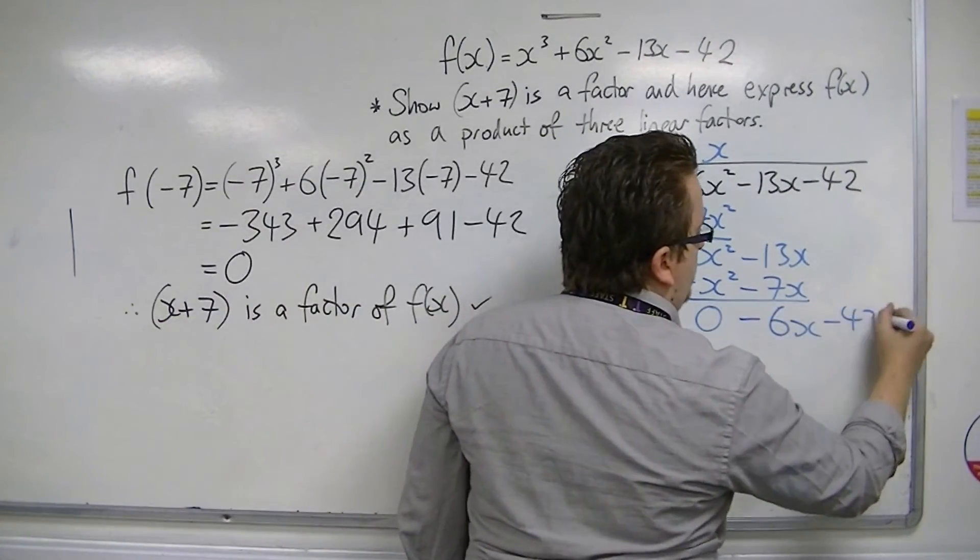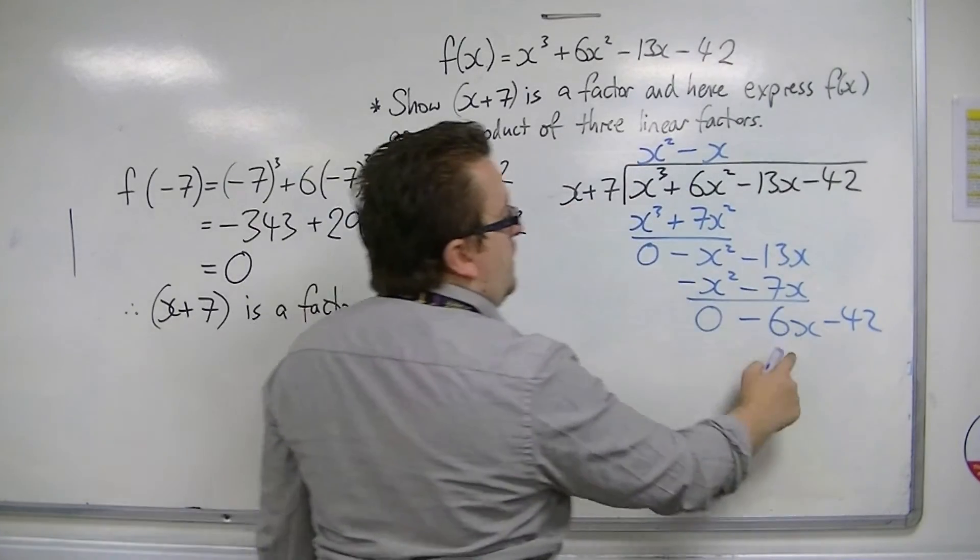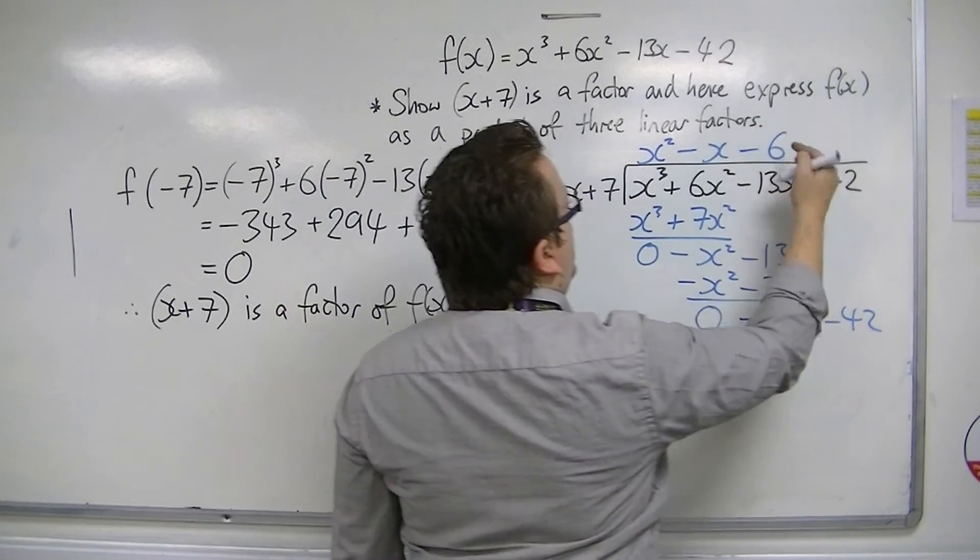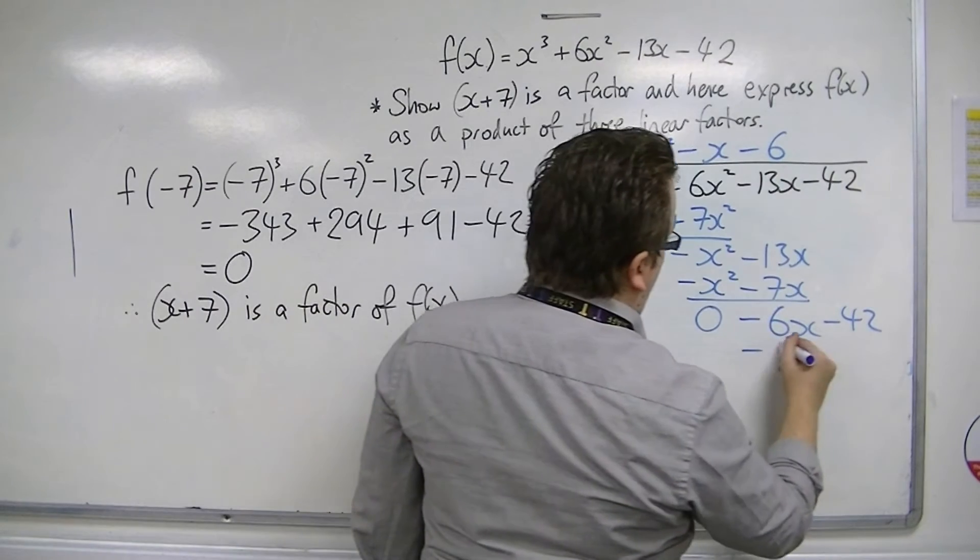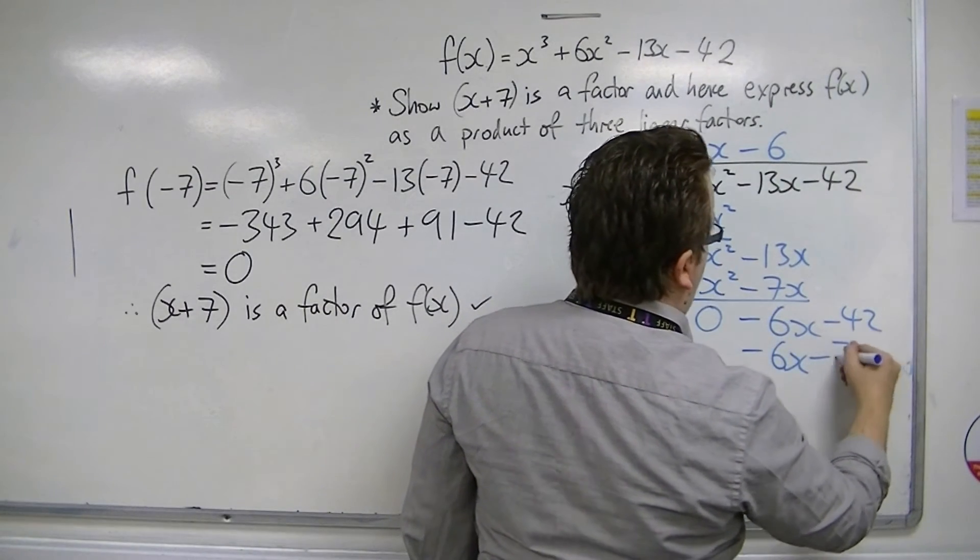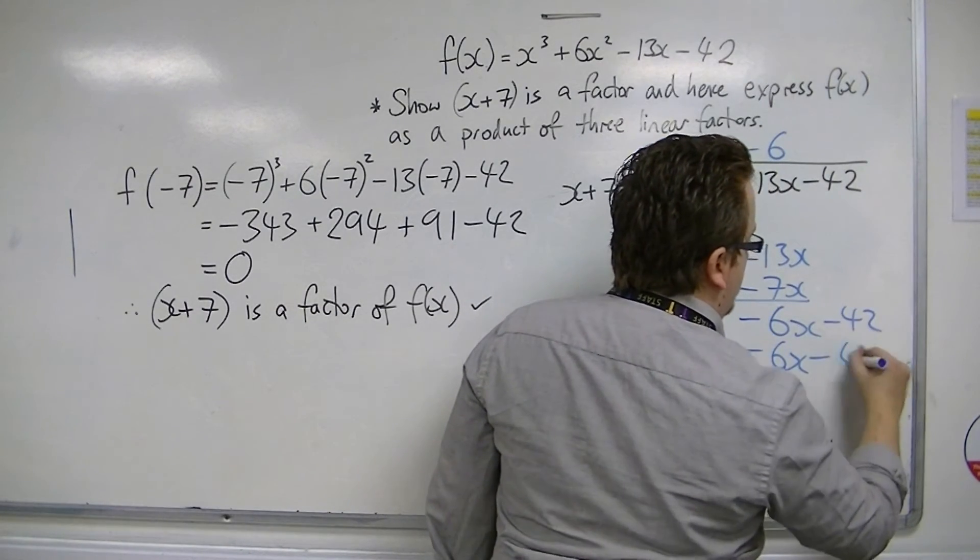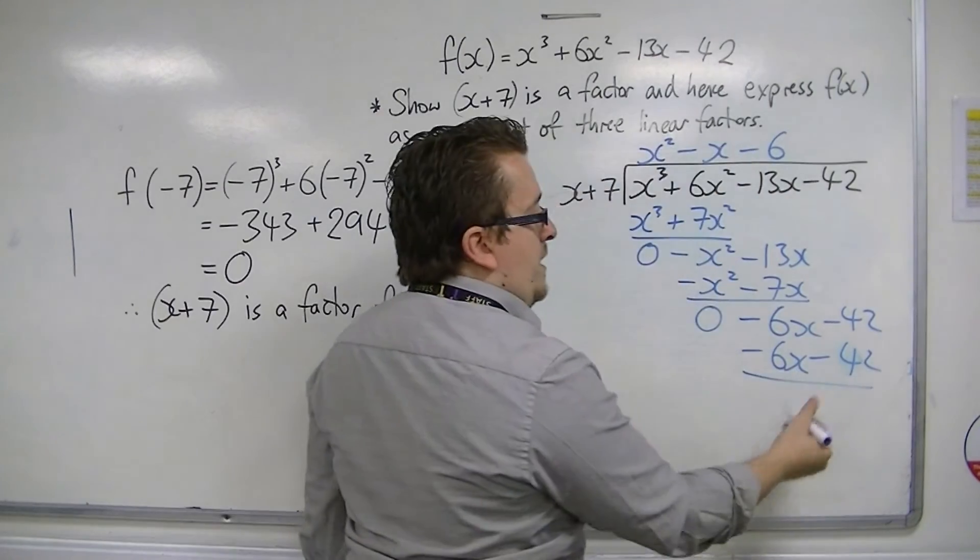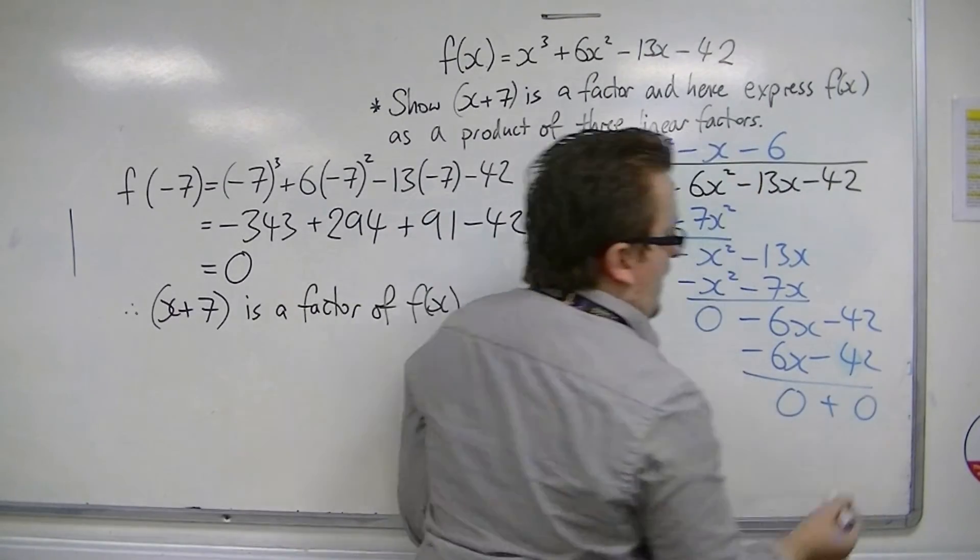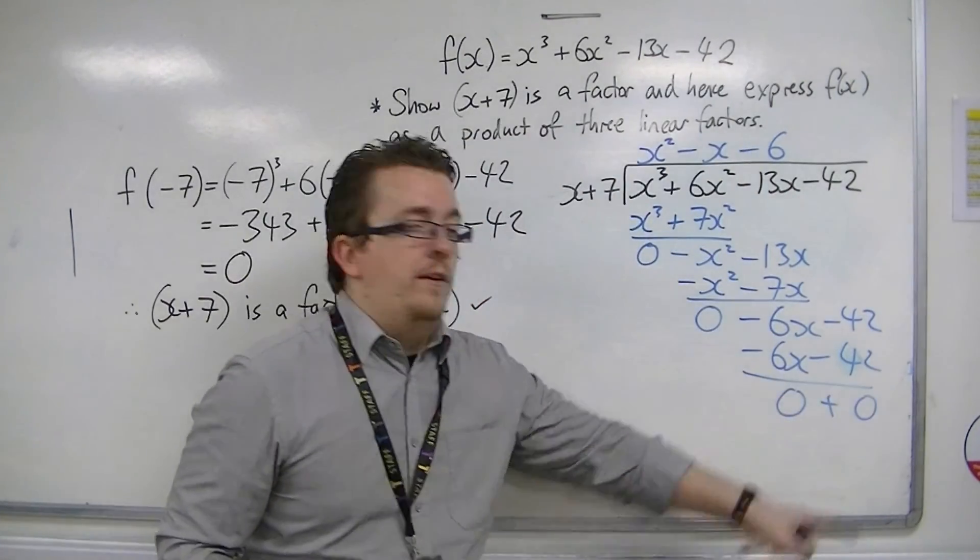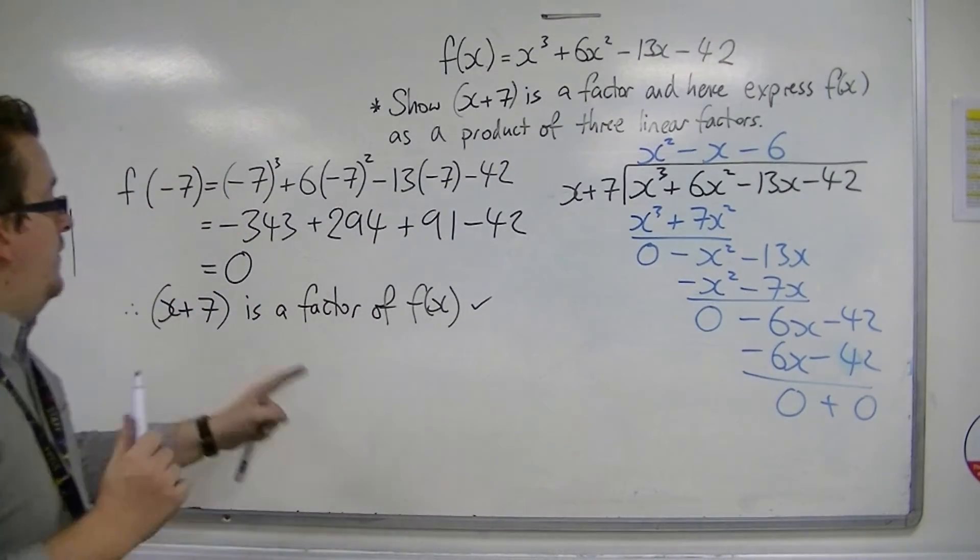Bring the minus 42 down. x's into minus 6x is minus 6. Minus 6 times these two terms is minus 6x minus 42. Draw a line, perform a subtraction. And as we should, we get 0 down here, as we would think so because it is a factor.